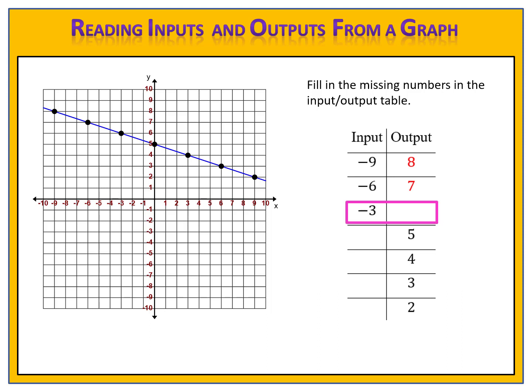The next part is for you to try. The input is negative 3. Can you find the output? Please pause the video here and come back when you're ready. Let's see how you did. The input is negative 3 and we want to find the output. We go over on our graph and look for negative 3 on the x-axis. We draw an arrow up to the graph and look across to see what the y value is at that point. The y value is 6, which means our point is negative 3, 6. So when the input is negative 3, the output is positive 6.